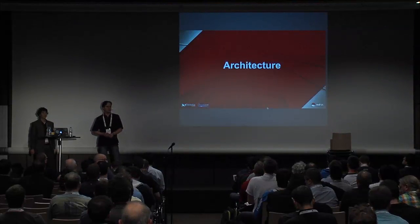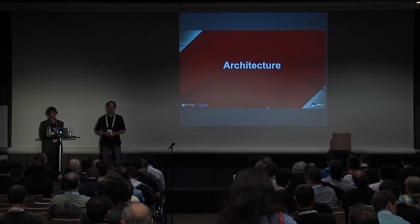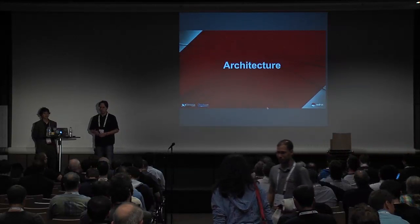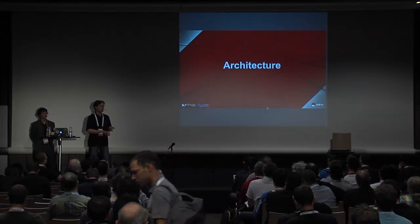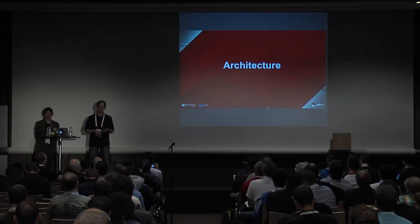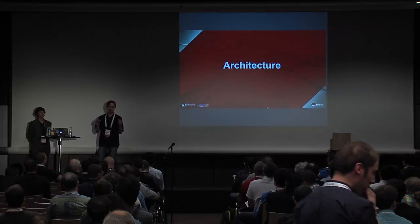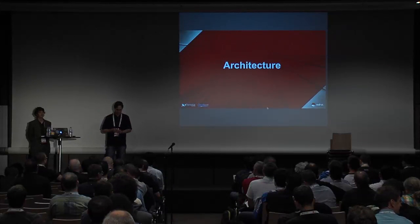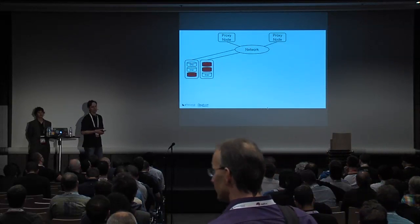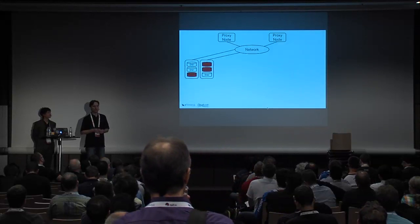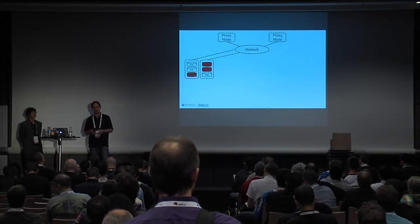Before talking about durability and availability in Swift, let's first have a small look into the architecture. Swift is an object storage — it's not block storage, it's not a file system. You access your data in Swift via a URL where you send a PUT or GET command. These operations are executed against a proxy node, which is the part your users talk to. In the backend, you have storage nodes that actually store your data on disks.